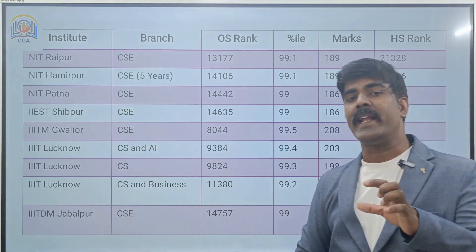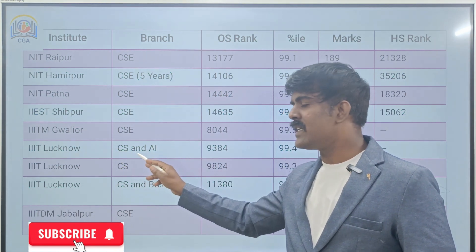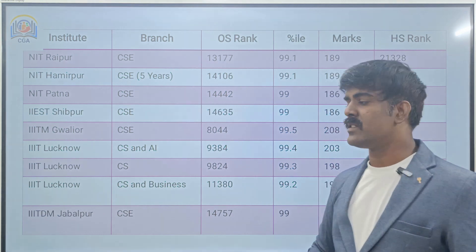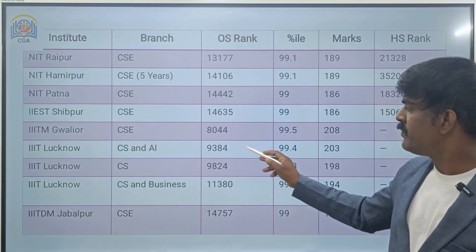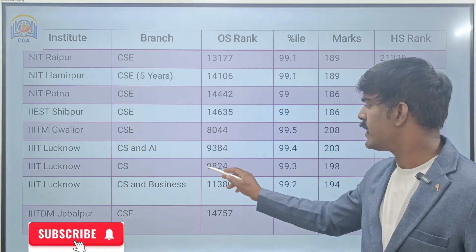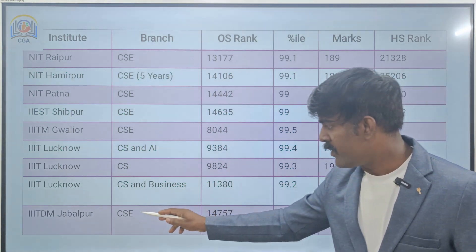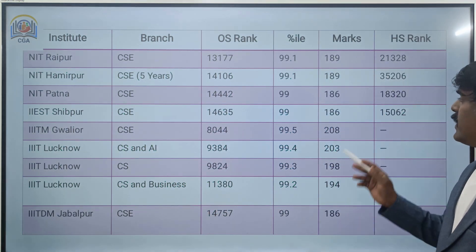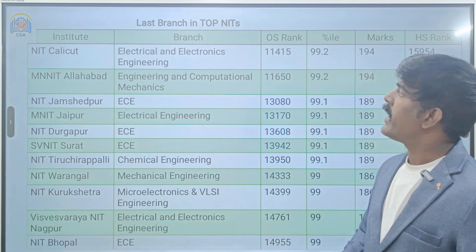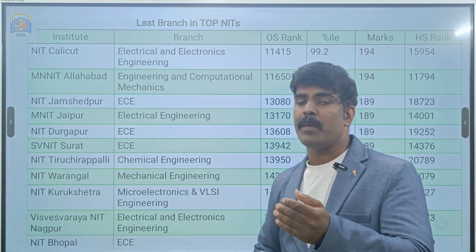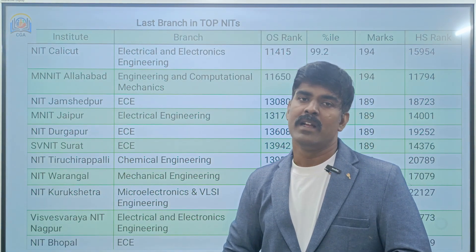Followed by top IIITs — Indian Institute of Information Technology. For example, IIIT Lucknow CS and AE, Lucknow CS, and Lucknow CS and Business Systems; and IIIT Jabalpur CSE. The respective rankings: around 8,000–9,384; Lucknow CS and BS around 11,380; Jabalpur 14,757. Around 10,000 ranking you can join IIIT Lucknow. Note: for IIITs there is no home state rank — it is a common rank only. We have now seen CSE for Tier 1, Tier 2, Tier 3 NITs, and IIITs.